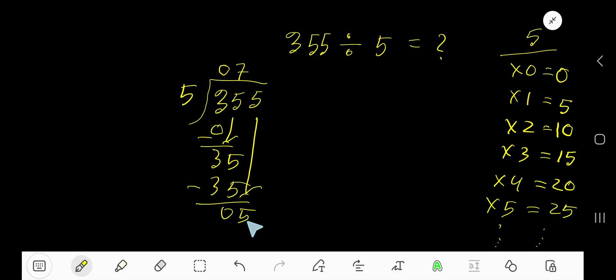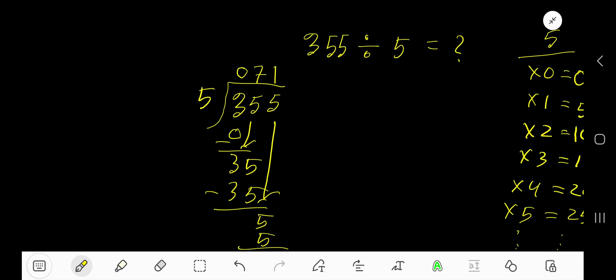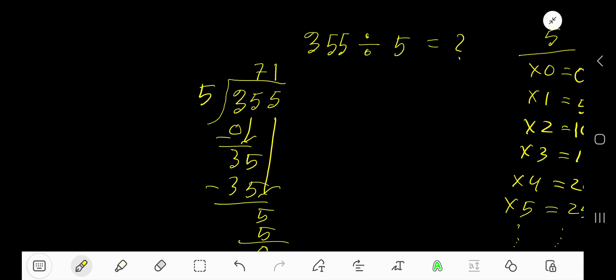0 and 5 makes 5. 5 goes into 5 how many times? 1 time. 1 times 5 is 5. Subtract and we get 0. So 71 is our answer.